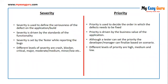Severity is driven by the standards of functionality, while priority is driven by the business value of the application. Severity is set by the tester while reporting the bugs, although the developer management can finalize priority based on scenario. Different levels of severity are crash, blocker, critical, major, moderate, medium, minor, or low. While different levels of priority are high, medium, and low.